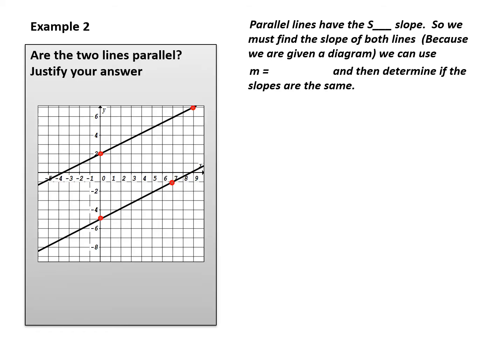Example 2. Are the two lines parallel? Justify your answer. Parallel lines have the same slope, so in order to answer this question we must find the slope of both lines. Because we are given a diagram, we can use the simpler formula of rise over run, and then determine if the slopes are the same. Let's start with the upper line — I'm going to call that line 1.